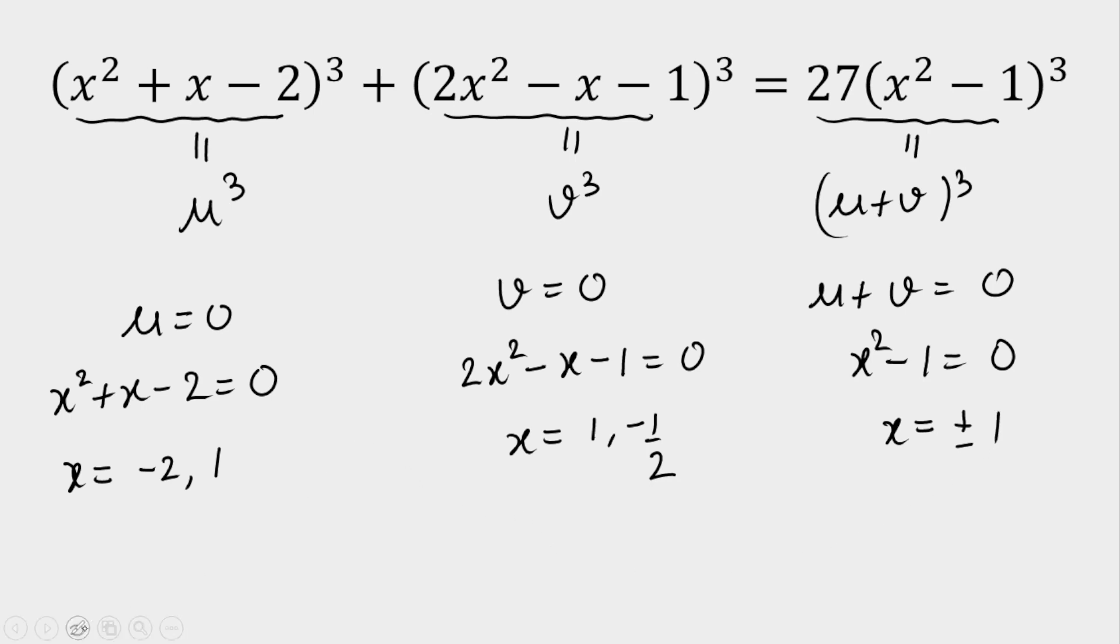Now in the end, I'll take the union of all three. So our answer is x = ±1, -2, and -1/2. This is our solution set. In total, we have four roots. That's our final answer, and that's all.